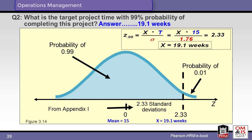Here we see another view to help explain the concept of the z value and its relationship to the normal distribution. In the previous example, we had a probability of 71.57% at 16 weeks. Let's approach the problem from another direction: if we want a 99% probability of success, how many weeks of time are required? We start by looking at the z value that gives us a 99% probability — that value is 2.33. We know the distribution has a mean of 15 weeks and a standard deviation of 1.76 weeks. Plugging these values into the equation, we find that we need 19.1 weeks to ensure a probability of success of 99%.